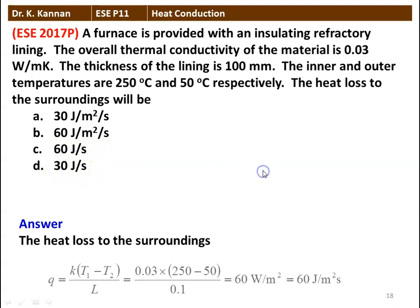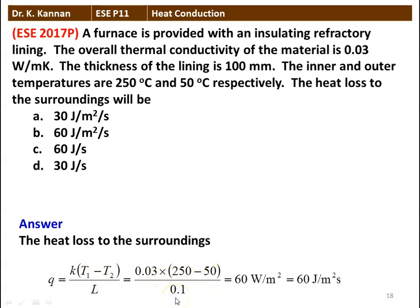The answer: heat loss Q = K·(T1 - T2) / L. Thermal conductivity is 0.03, temperature difference is 250 - 50 = 200, divided by thickness 100 millimeter which is 0.1 meter. Calculating: 60 watts per meter square, which is 60 joules per meter square per second. The answer is option B: 60 joules per meter square per second.